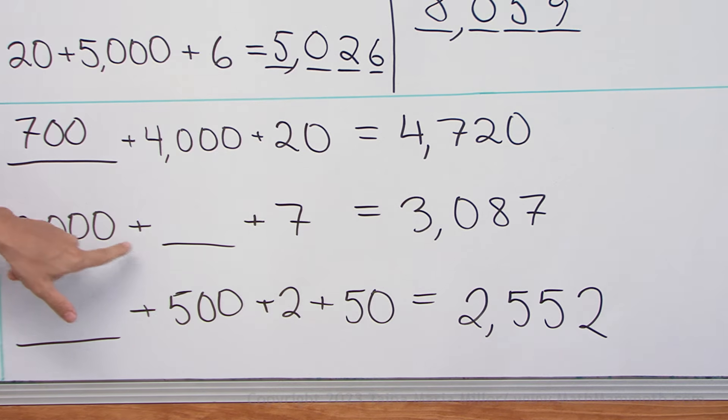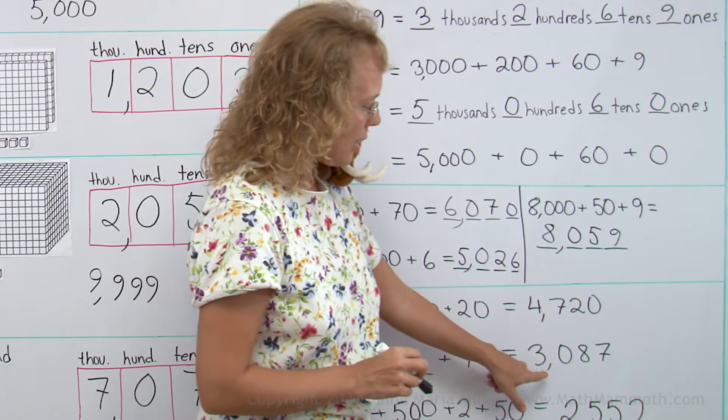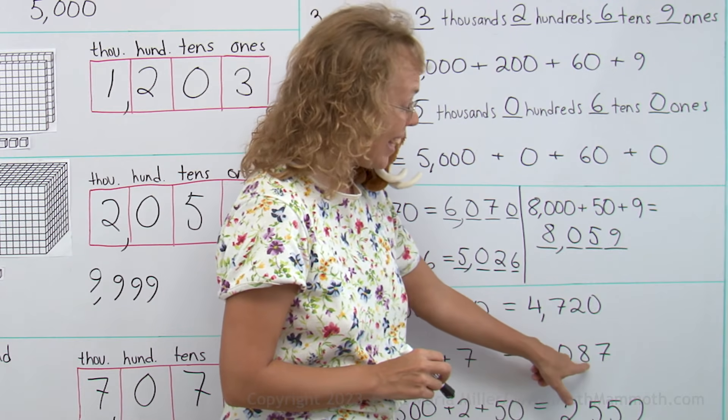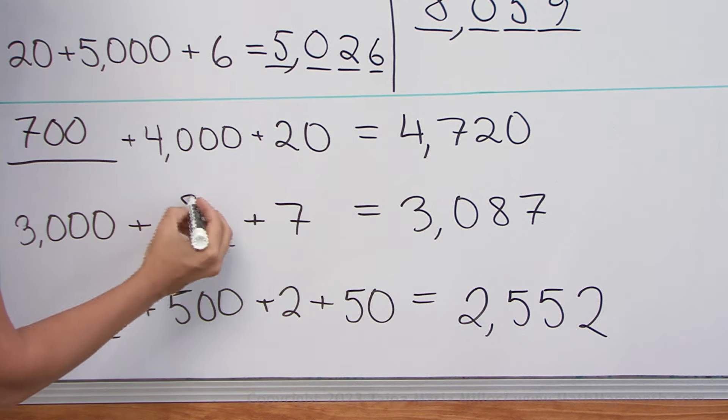How about here? Three thousand plus something plus seven. And this number is three thousand eighty-seven. You can just hear it. It's eighty. Eighty is missing.